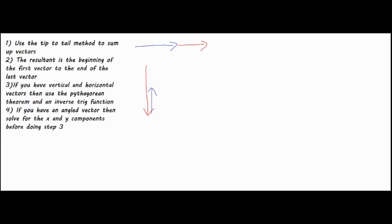The tip-to-tail method is basically just drawing one vector, and wherever the tip of one ends, the next one starts — hence the name tip-to-tail. It doesn't matter what order you connect them in, as long as you connect them tip-to-tail you're going to get the correct answer.